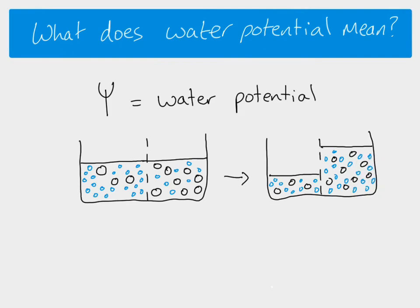Another way that you can think about water potential, rather than just the tendency of water to move, is in terms of the energy available in that particular system. It's like saying this side has got a higher water potential, therefore more energy, and because there's more energy, the water moves across to where there is less energy. Two different ways of thinking about it, but they both end up with the same thing happening.